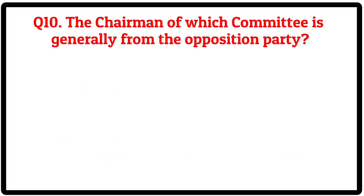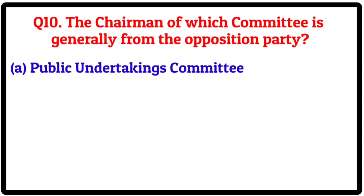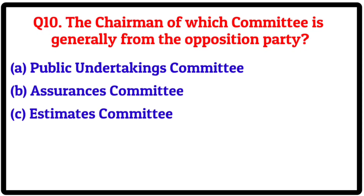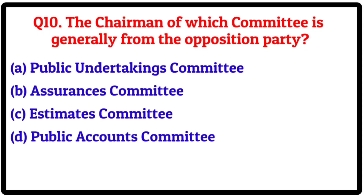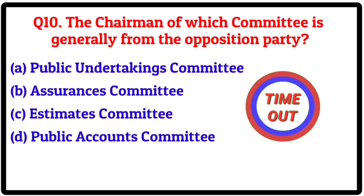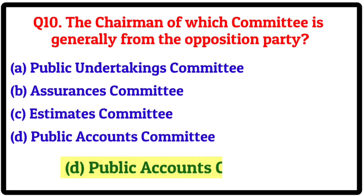Question 10. The chairman of which committee is generally from the opposition party? Option A: Public Undertakings Committee. B: Assurances Committee. C: Estimates Committee. D: Public Accounts Committee. Correct answer is D: Public Accounts Committee.